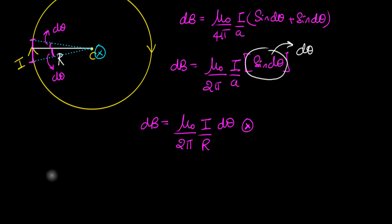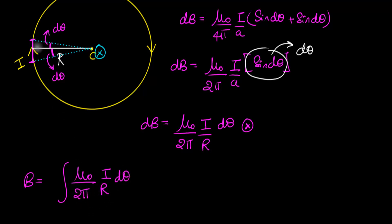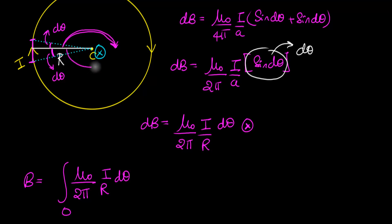Let's calculate the integral. The total magnetic field is the integral of μ₀/2π times i/r times dθ. Where should I integrate from? I want theta to go all the way from 0 to π. Because dθ extends on either side of the current element, when it sweeps through π radians it covers the full circle — I don't have to go 360 degrees, just 180 degrees, which is π.